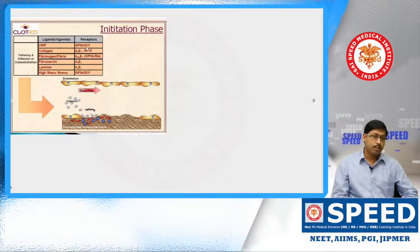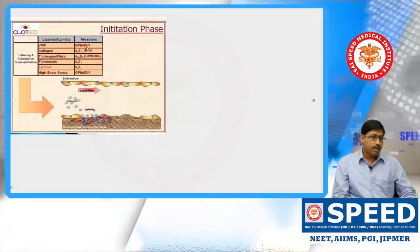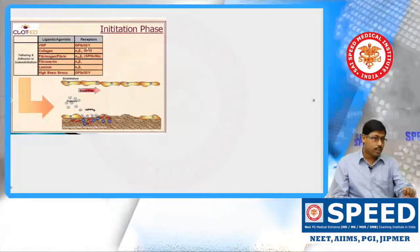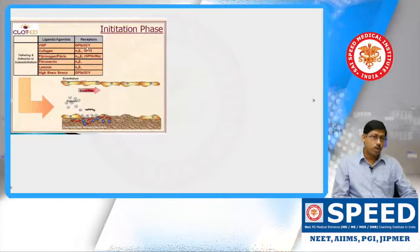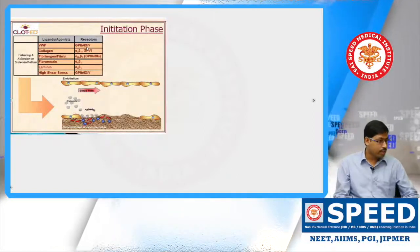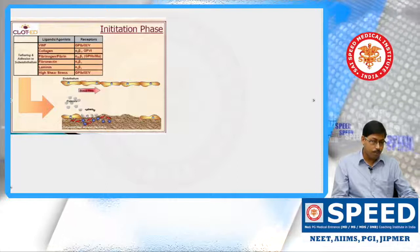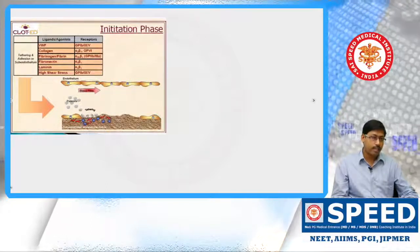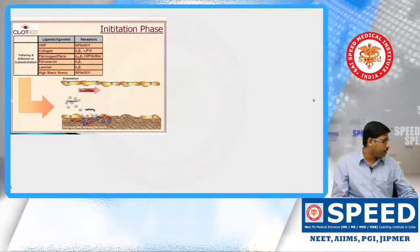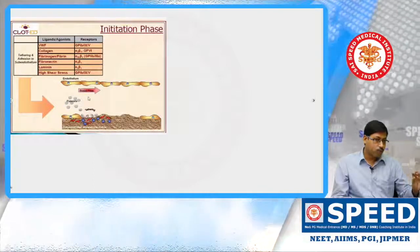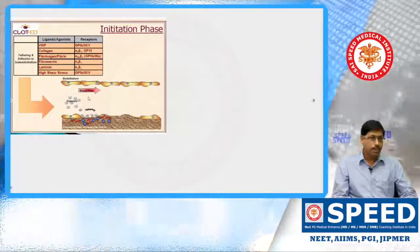The platelets bind with von Willebrand factor, and von Willebrand factor binds with collagen in the subendothelial space, using GPIb9 as the receptor. GPIb9 is already present on the platelets, so why are they not initially binding with von Willebrand factor? That is because only when there is shearing stress and changes in the platelet surface does GPIb9 get activated. It needs some shearing force to change the conformation of GPIb9.